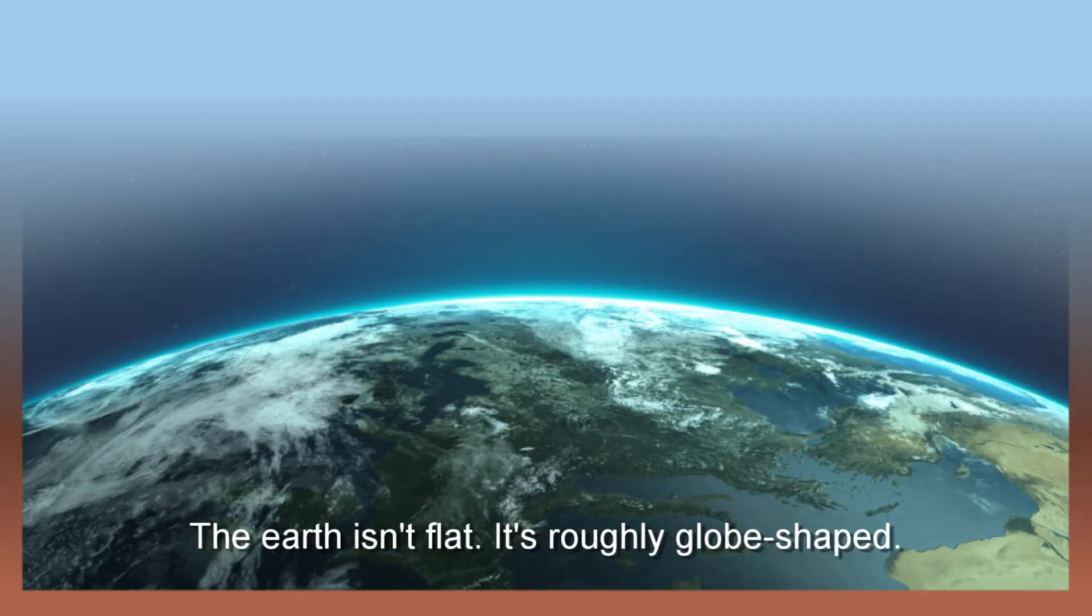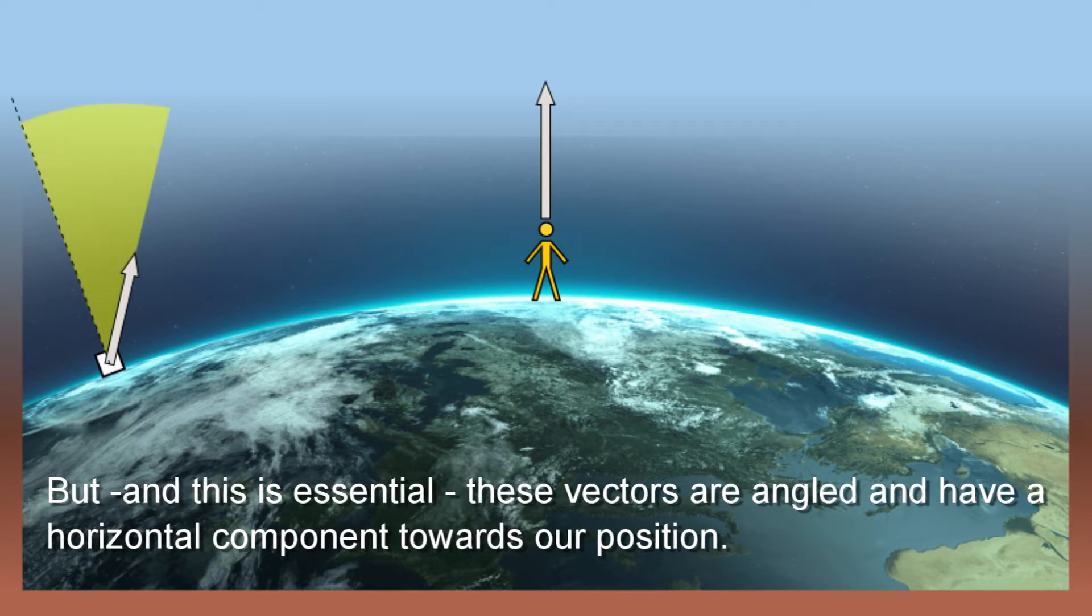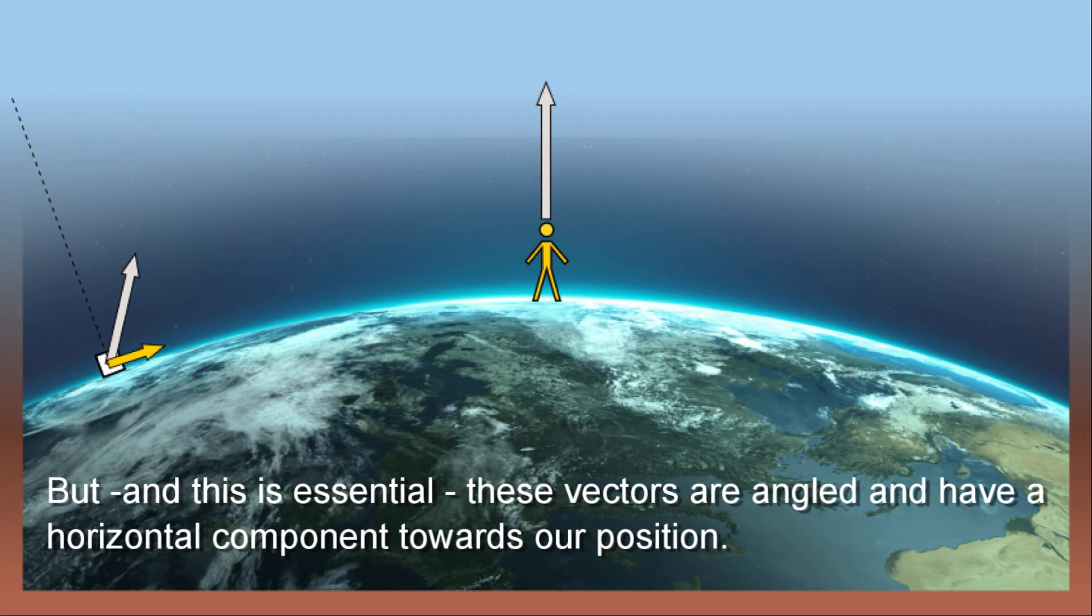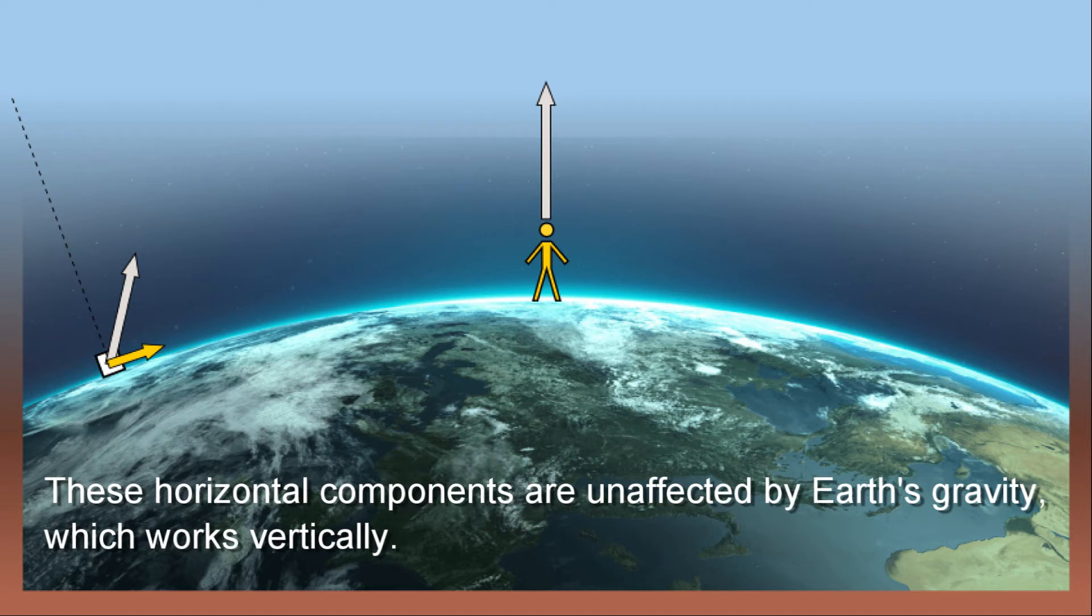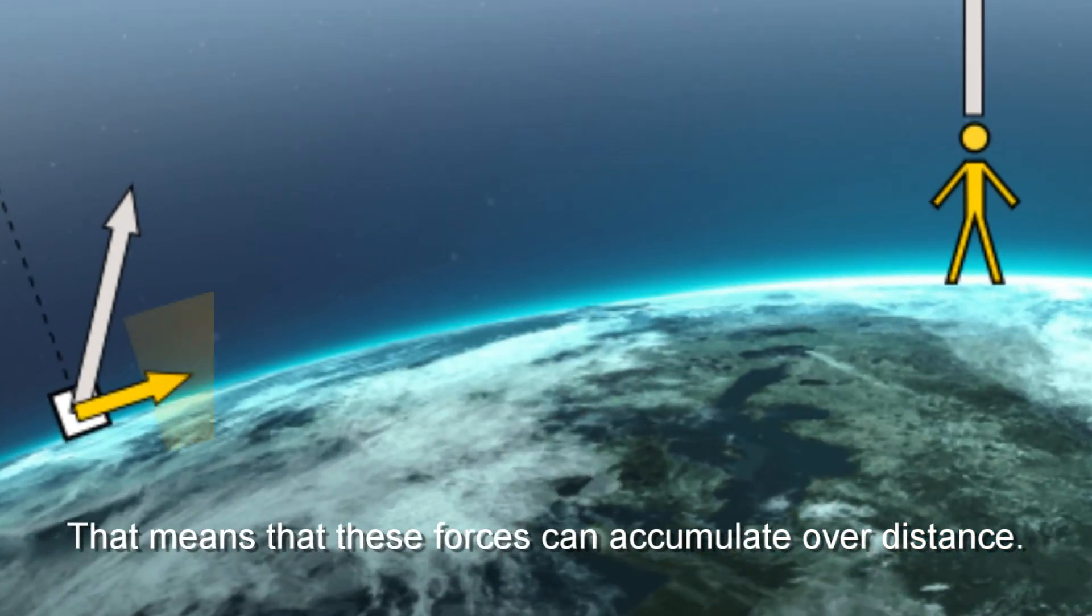The earth isn't flat. It's roughly globe-shaped. So water, well away from where we are, will be slightly further away from the moon, experiencing a slightly lesser acceleration towards our position. But, and this is essential, these factors are angled and have a horizontal component towards our position. These horizontal components are unaffected by Earth's gravity, which works vertically. That means that these forces accumulate over distance.